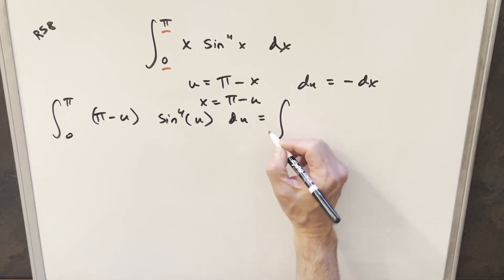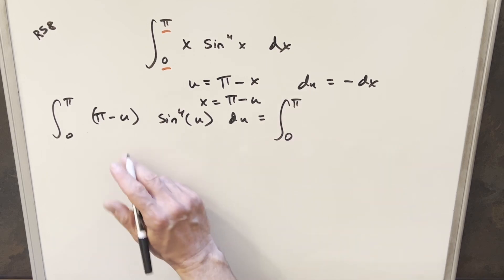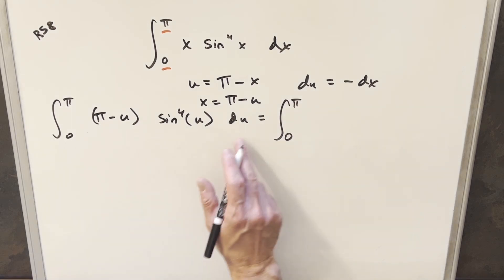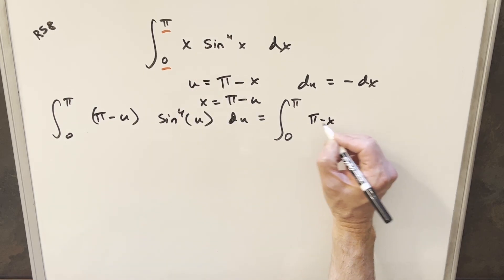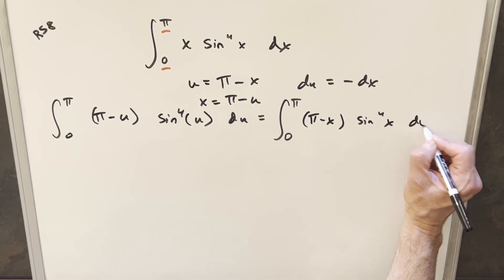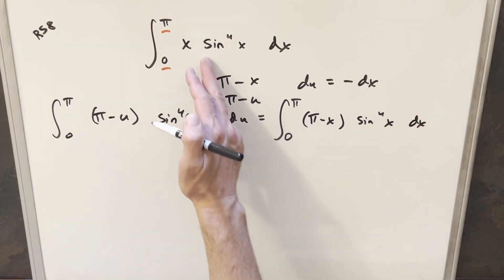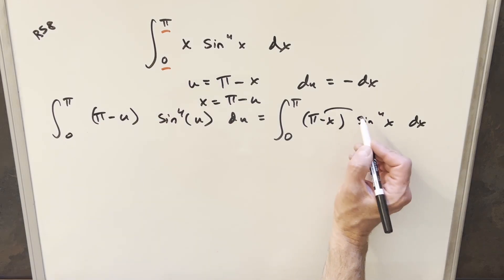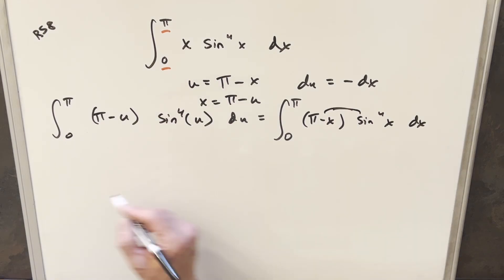So what I can do is just change this sine of pi minus u, we can just change this back to just u. And then from here what I'm going to do is just a variable change, because this is a definite integral. I can change it back to x if I want, and that's going to help me so I can try to add it to our original integral. So we'll write this as pi minus x sine x to the fourth dx. And we're starting to see the similarity here to our original integral.